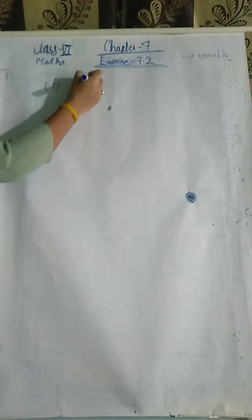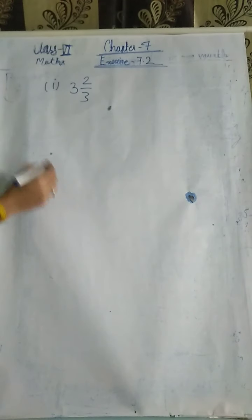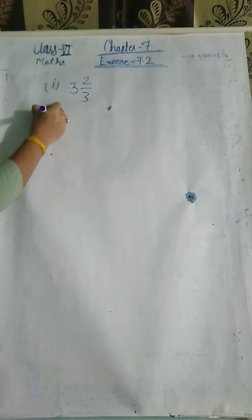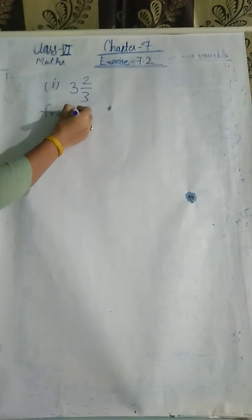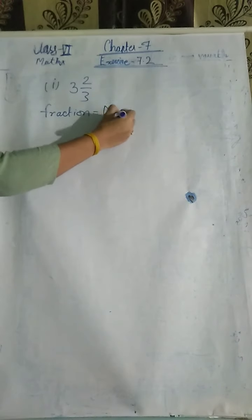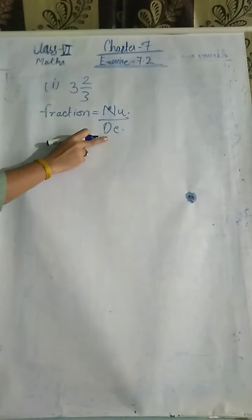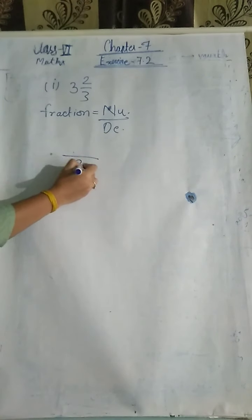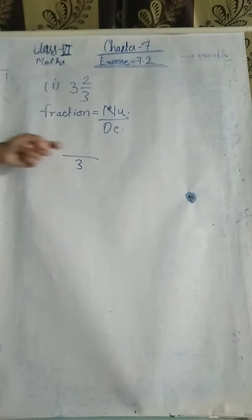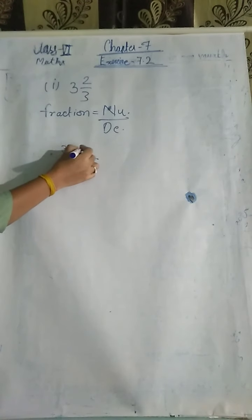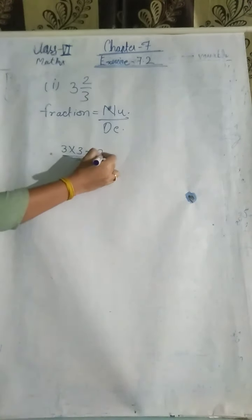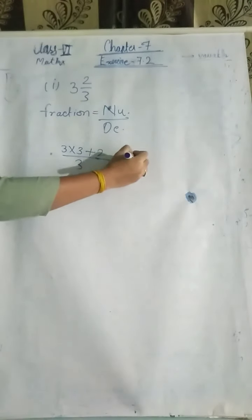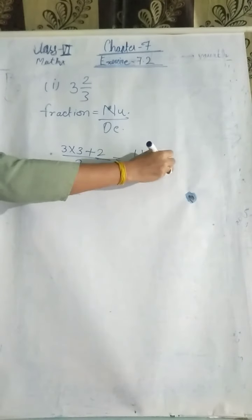Change into proper fractions. The first one is 3 and 2 upon 3. The denominator is the same — 3 is the same. Now, for the numerator: 3 into 3 plus 2, denominator stays 3, plus 2 gives us 11 upon 3. This is the answer.